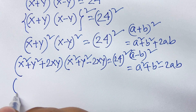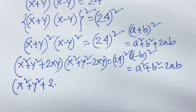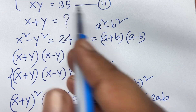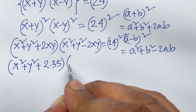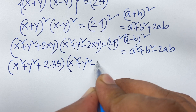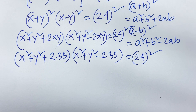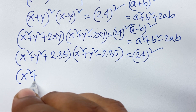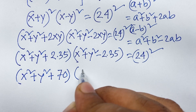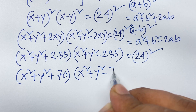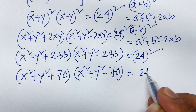Now, x squared plus y squared plus 2 times xy — our second equation is xy equals 35. So I can say: (x squared plus y squared plus 2 times 35) times (x squared plus y squared minus 2 times 35) equals 24 squared. That gives (x squared plus y squared plus 70) times (x squared plus y squared minus 70) equals 576.